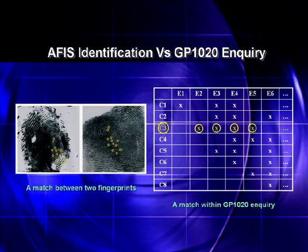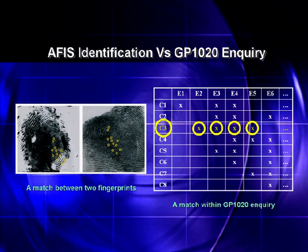The photo in the figure shows a match between two fingerprints within AFIS identification, whereas the table presents a match within a GP-1020 inquiry. The yellow circles show the matches in evidence E2, E3, E4, E5, etc. during the GP-1020 exercise, indicating the accident associated with cause 3 from the GP-1020 database will most likely assist in facilitating the investigation of the current accident.